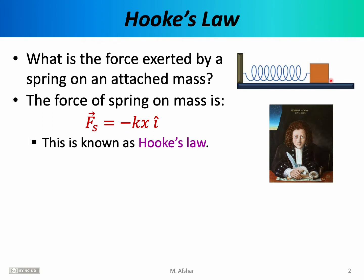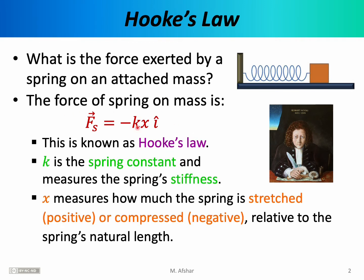The first person to systematically address this question was Robert Hooke. Robert Hooke was a contemporary of Isaac Newton. In fact, Newton and Hooke were bitter rivals. Robert Hooke found that the force that a spring exerts on a mass attached to it is given by this formula. The spring force is equal to minus kx i-hat. This important equation is known as Hooke's Law. The k in this equation is referred to as the spring constant.